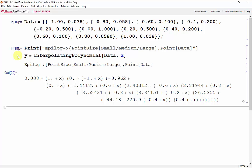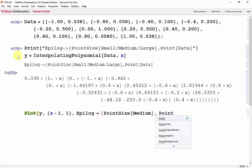Now let's plot our interpolating polynomial with our data points showing. So we'll use the plot function, y, which is what we want to plot. And it goes from negative 1 to 1. And then we'll use the epilogue function with a point size of medium. And we'll take the points from data. Close all the brackets. Shift-Enter.